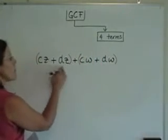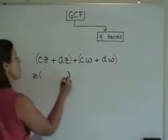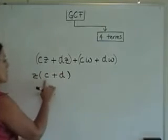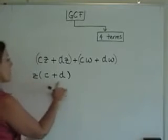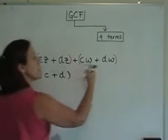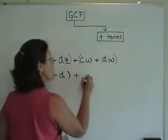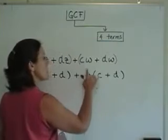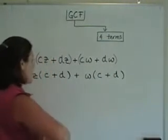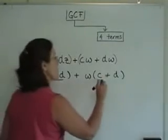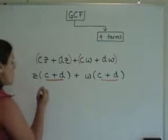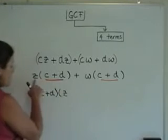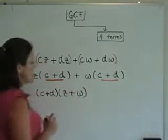In this first group, there's a common factor of z. I'm going to take that common factor out and write inside the parentheses c plus d, because z times c is the first term and z times d is the second term. Likewise, in the second grouping, I'm going to factor out a positive w. When I do that, I need a c plus d so that distributing gives me the original third and fourth terms. Now we see the intermediate step from earlier — there's a common binomial factor that I'm going to factor out. The factors z and w go in their own second set of parentheses.